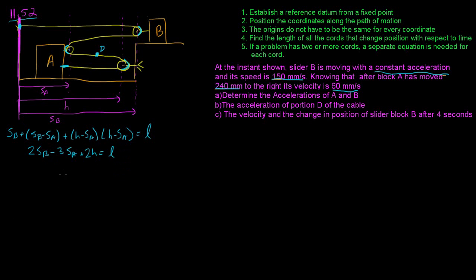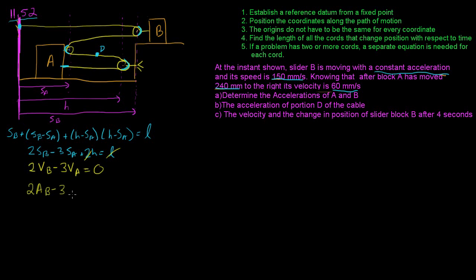Differentiating the rope length equation with respect to time gives the velocity equation: 2·VB minus 3·VA equals 0 — the constants H and L drop out. Differentiating again gives the acceleration equation: 2·aB minus 3·aA equals 0.